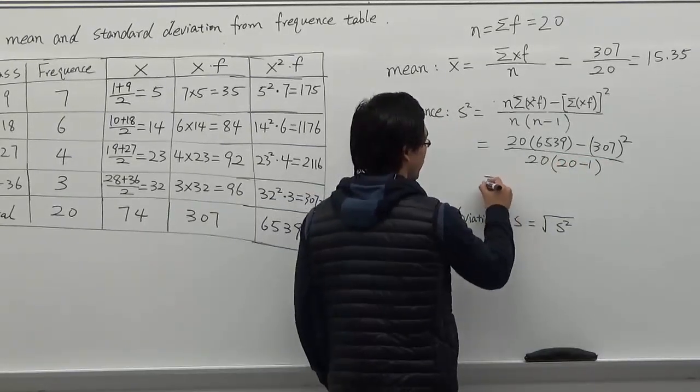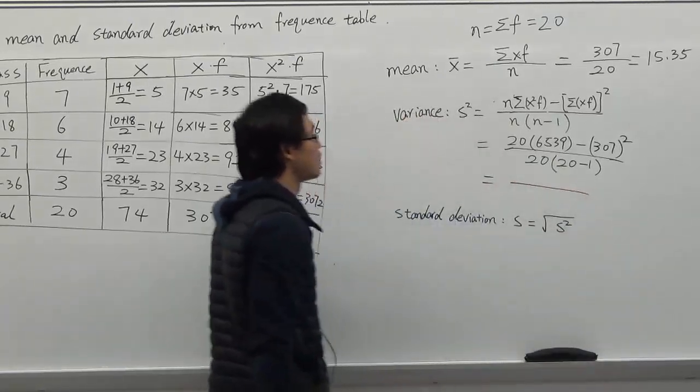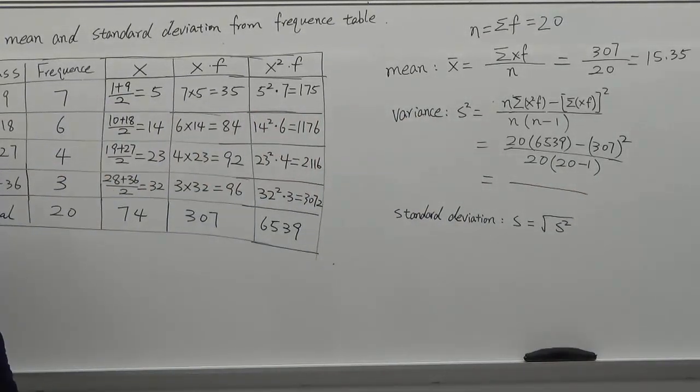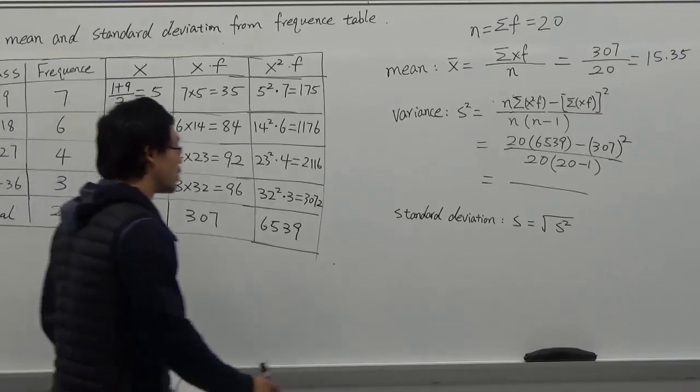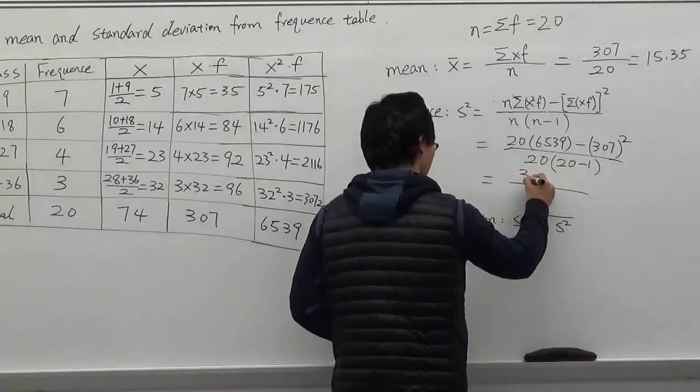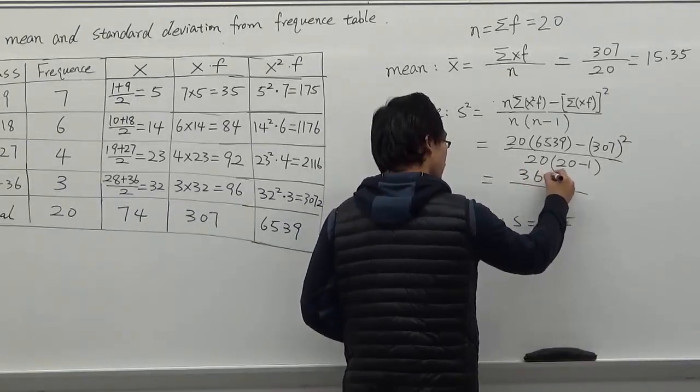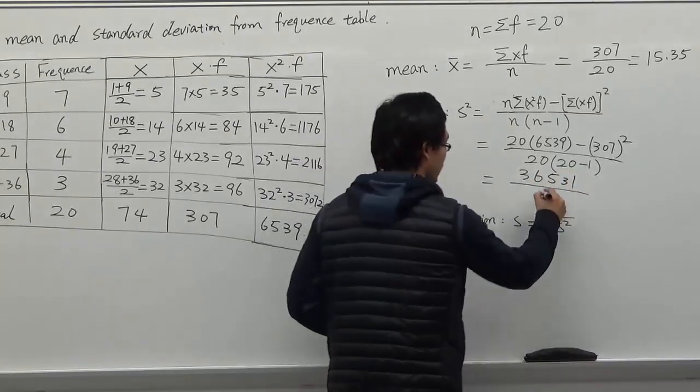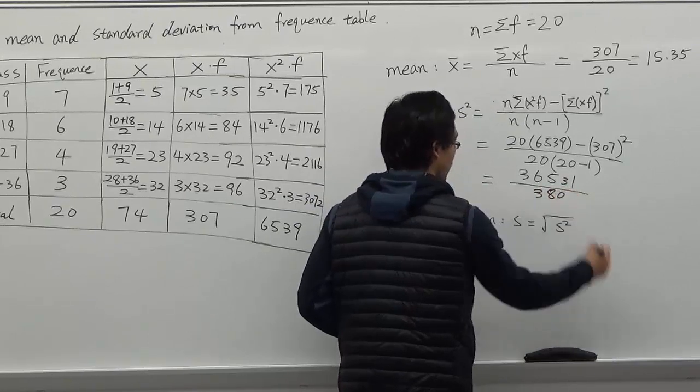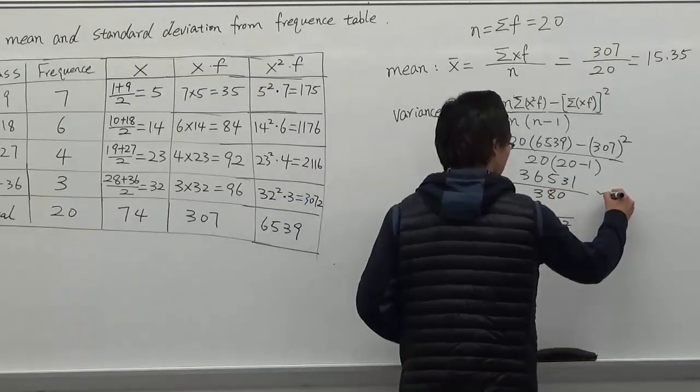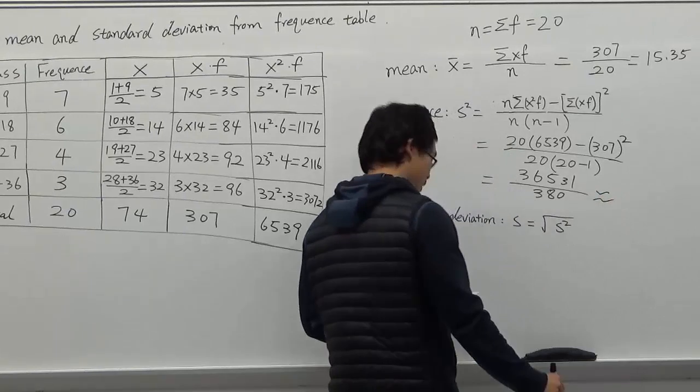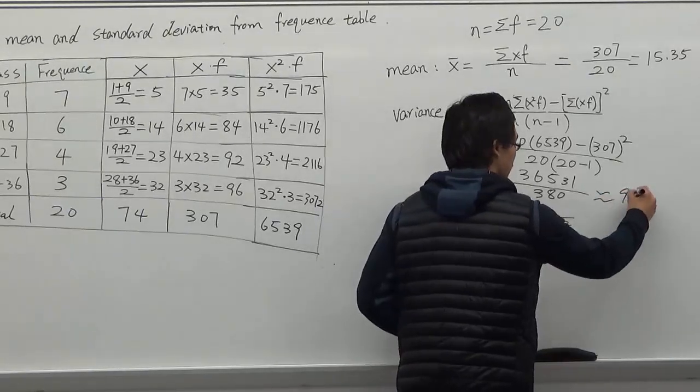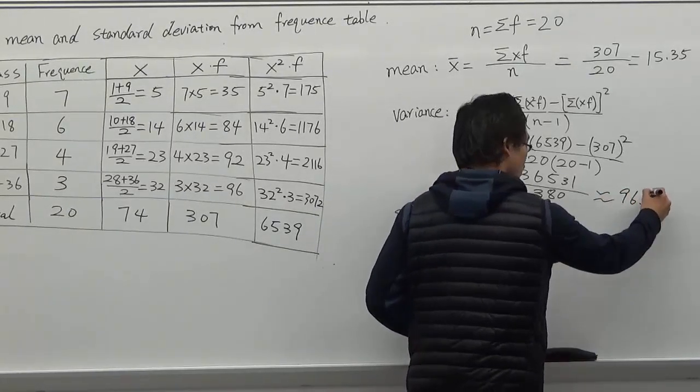And then I do a calculation. What's the top gives you? How about the denominator is 380. And then we round to 2 decimal places. We get 96.13.